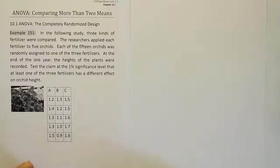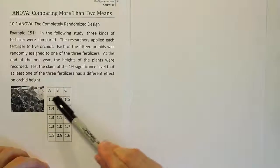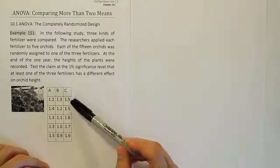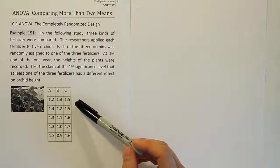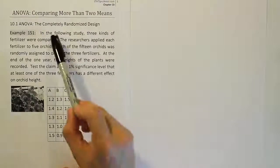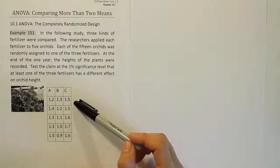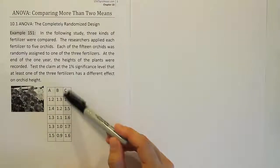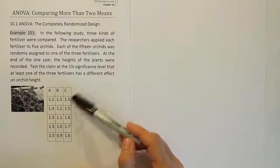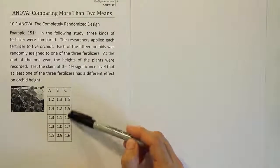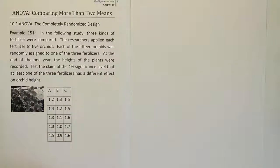Alright, so we're looking at the design where they basically apply 15 orchids randomly to one of three treatments. This means it's a completely randomized designed experiment. You take all of the experimental units, which are essentially the 15 orchids, and you just randomly assign them to one of these three fertilizers. It's also a balanced design because there's an equal number of plants in each treatment.